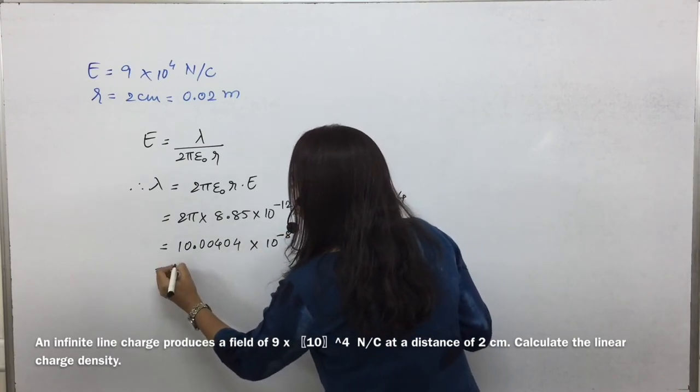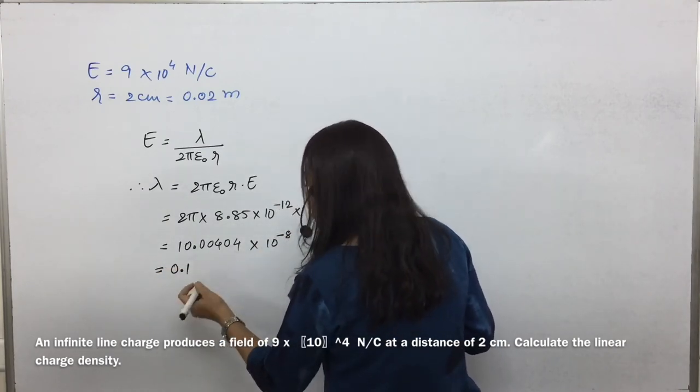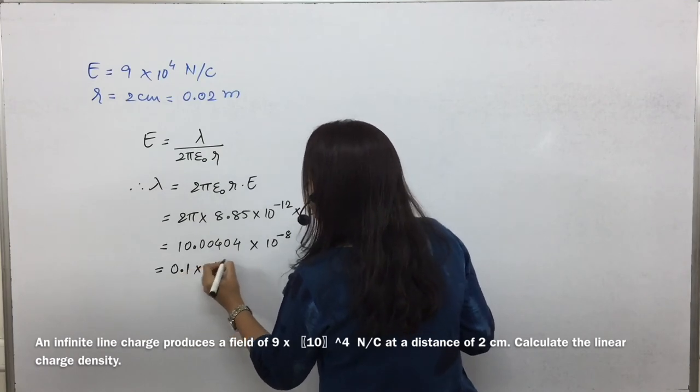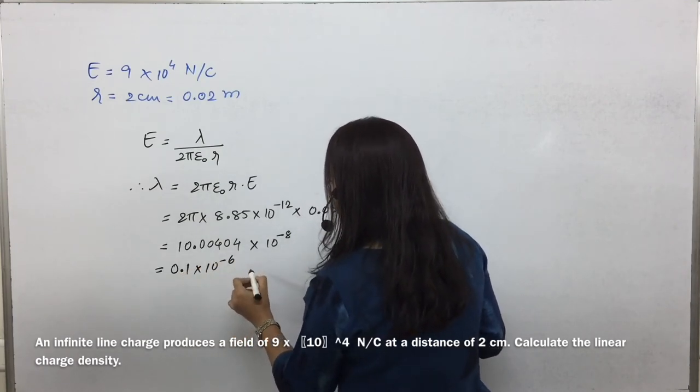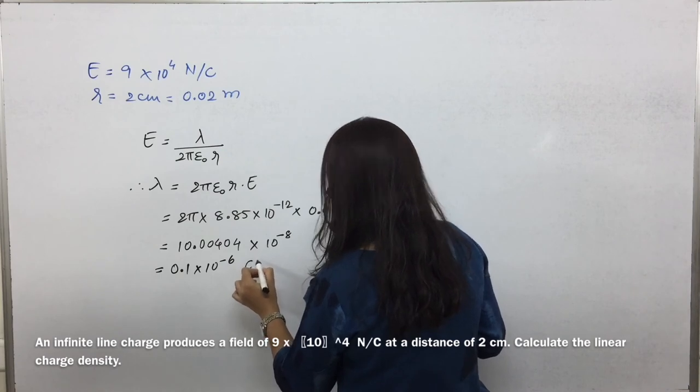So that will be 0.1 into 10 to the power minus 6 coulomb per meter.